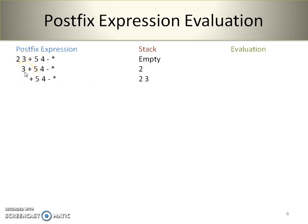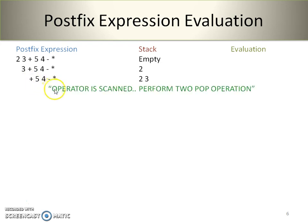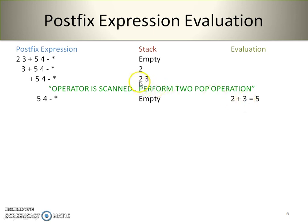The next character is 3, which is also an operand — perform push onto the stack. The next scanned character is the plus operator. Since an operator is scanned, we perform two consecutive pop operations. The first popped operand is 3, which becomes the second operand in the arithmetic operation. The second popped operand is 2, which becomes the first operand. We perform 2 plus 3, and the result is 5.